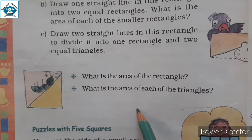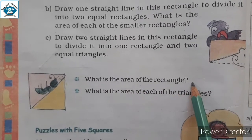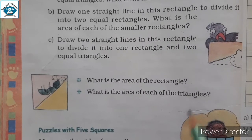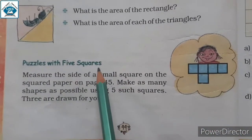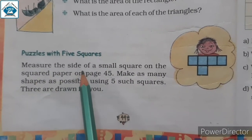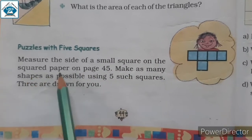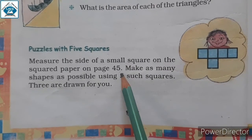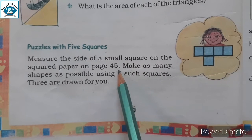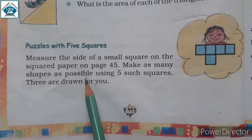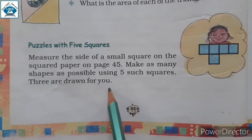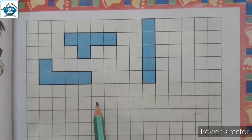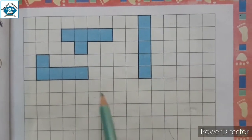Here are two more questions. What is the area of the rectangle? What is the area of each of the triangles? We have already found it. Now, puzzles with 5 squares. Let's measure the size of a small square on the square paper on page 45. Make as many shapes as possible using 5 such squares. Three are drawn for you. In the next page, we can see 3 pictures drawn here, and these all are made with 5 squares.